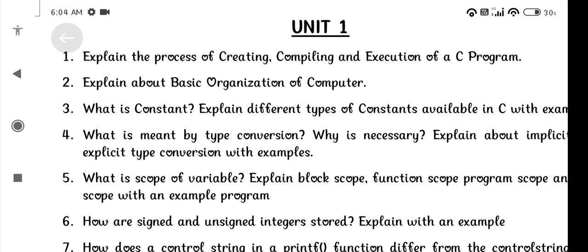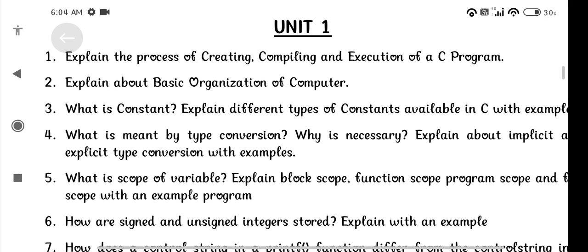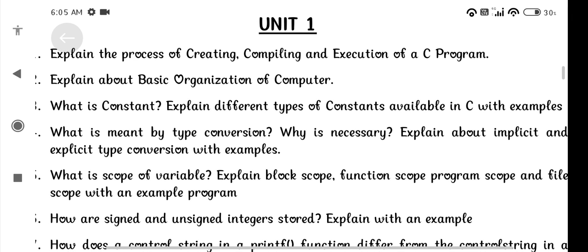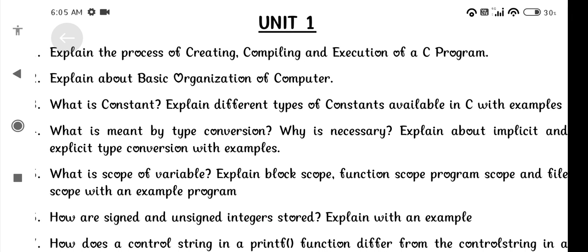3. What is constant? Explain different types of constant available in C with examples. 4. What is meant by type conversion? Why is necessary? Explain about implicit and explicit type conversion.